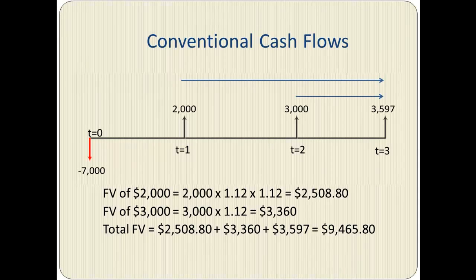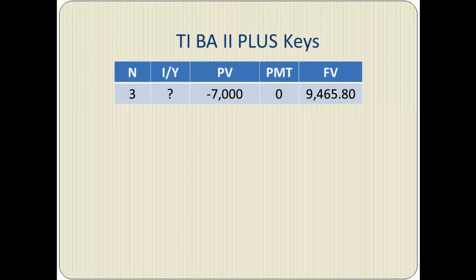The next step is to set up our calculator such that N equals 3, because we have three time periods. Present value is the initial cash flow of $7,000, which is the outflow. And the future value is going to be the sum of all the future values we calculated: $9,465.80.